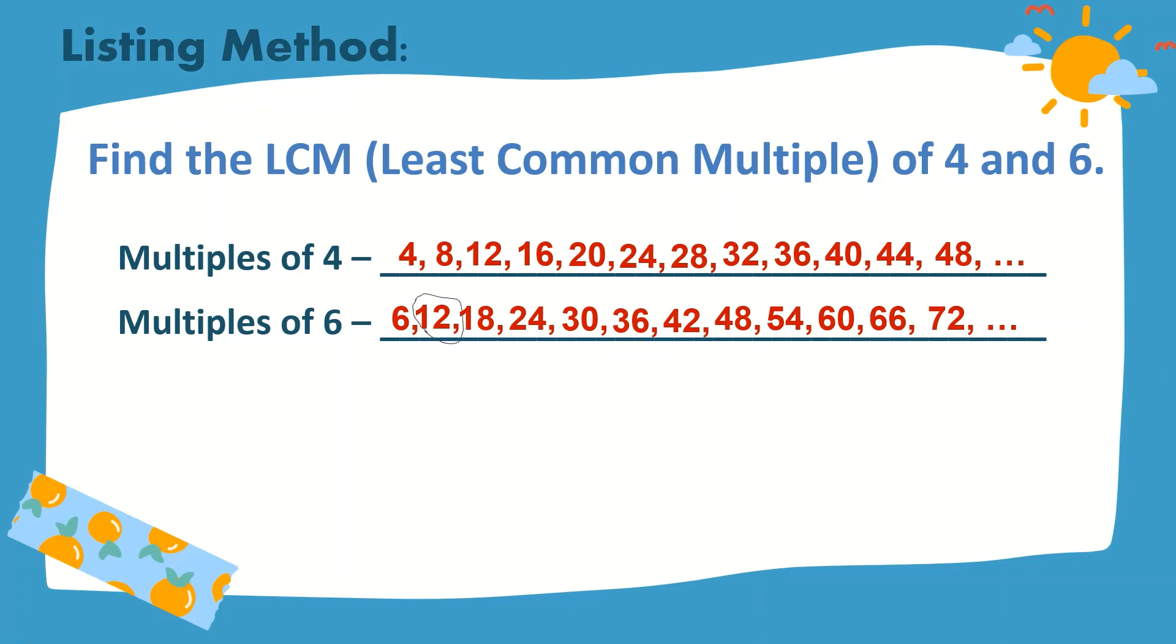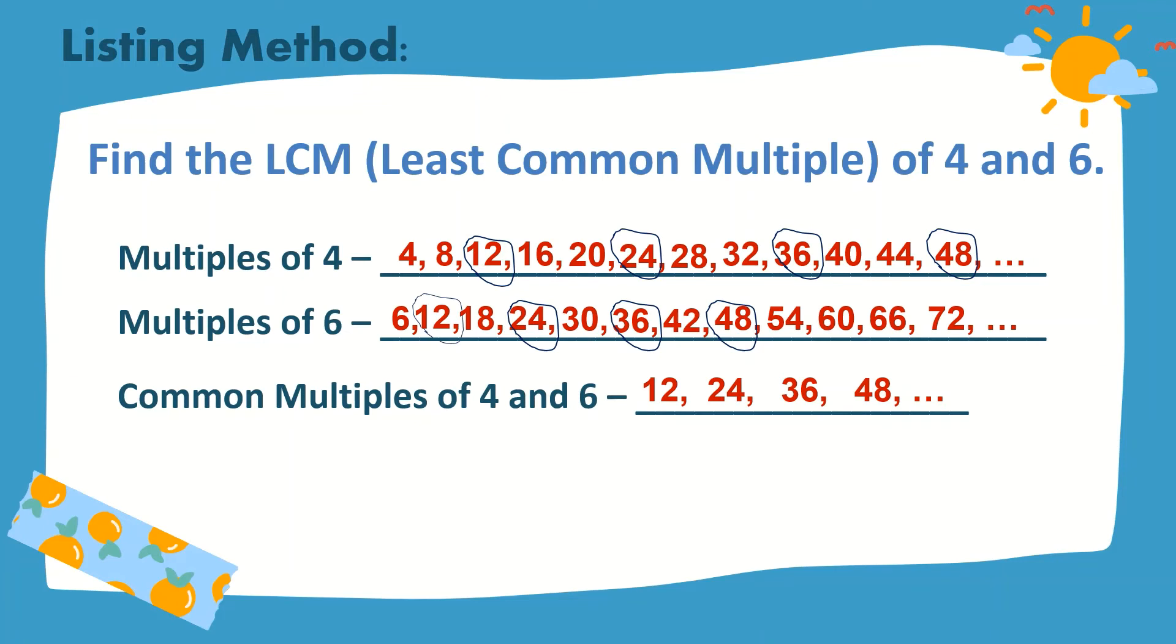Now, what are the common multiples of 4 and 6? We have 12, 24, 36, 48, and so on. Meaning, there are still more common multiples of 4 and 6. But the least among them is 12.